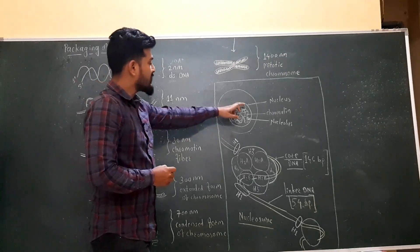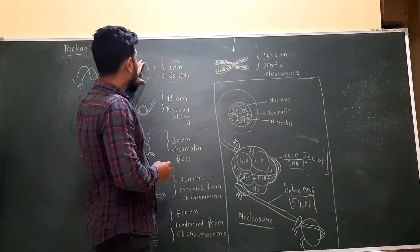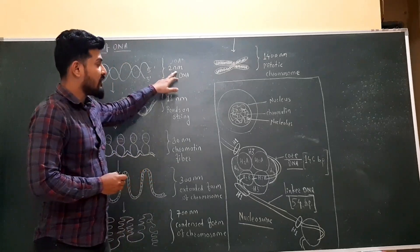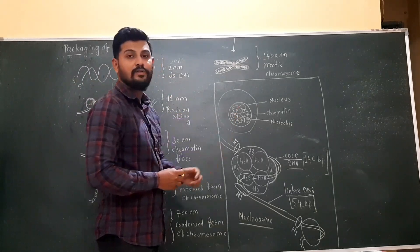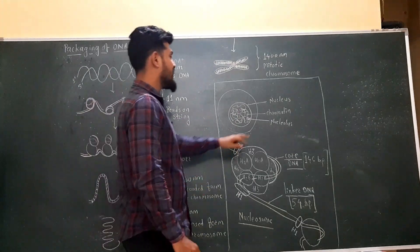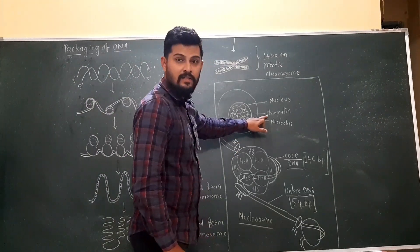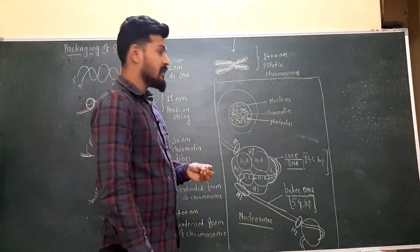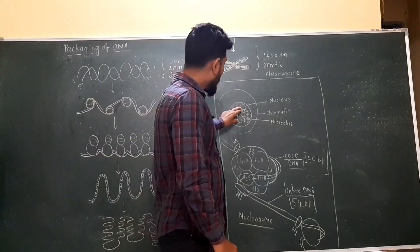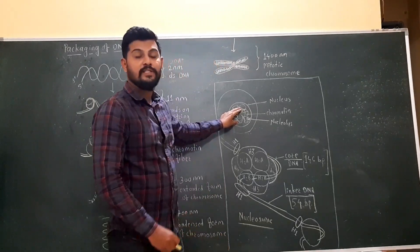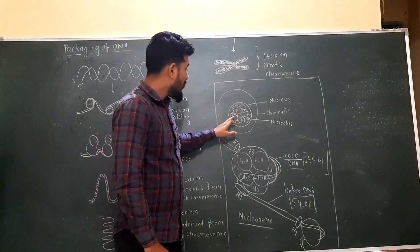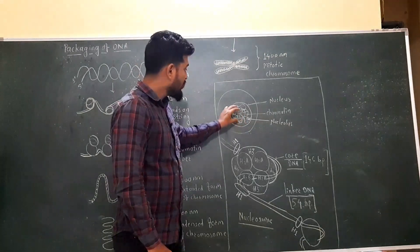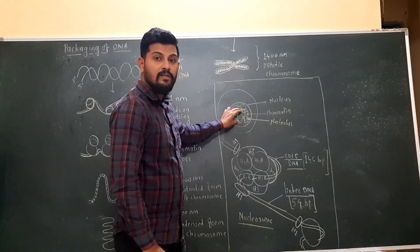Inside the nucleus, the double-stranded DNA which has around 2 nanometer diameter is wrapped around the histone proteins and they form a thread-like structure. This thread-like structure is called as the chromatin material, also called as the colored thread material. When we stain the nucleus by using the Feulgen stain, this type of threads are observed inside the nucleus when observed under the microscope.